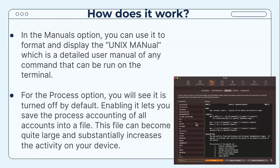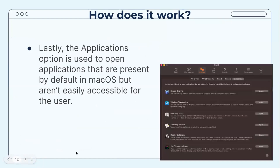The user manual provides a detailed breakdown of commands you can perform in your Terminal, including the name of the command, the synopsis, the description, and more. The Applications option is used to open applications that are present by default in macOS but aren't easily accessible, such as Screen Sharing, where you can show your screen for other people to view.